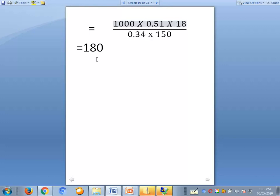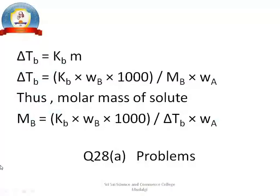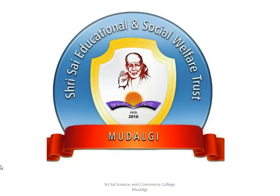Four important problems related to molecular mass of solute and change in temperature delta tb have been solved. There are two key formulas: first, delta tb equals kb times m (molality); second, molecular mass of solute equals 1000 times kb times weight of solute, divided by delta tb times weight of solvent. Based on these formulas, one to three mark questions may be asked.